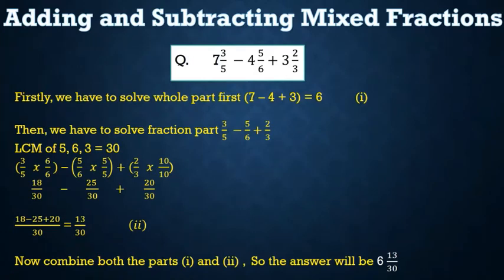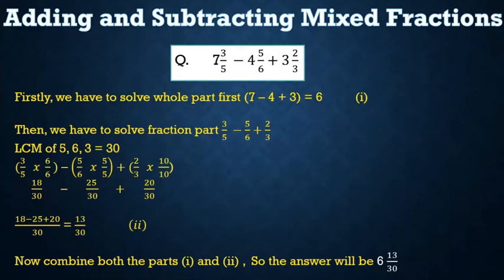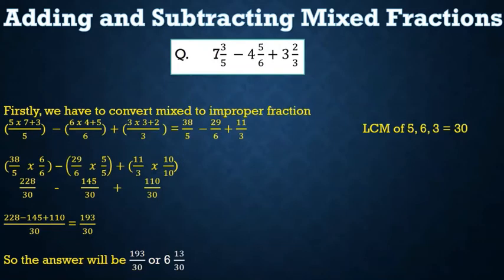Then we solve the fraction part: 3/5 - 5/6 + 2/3. The LCM of 5, 6, and 3 is 30. Converting: (3×6)/30 - (5×5)/30 + (2×10)/30 = 18/30 - 25/30 + 20/30 = (18 - 25 + 20)/30 = 13/30. Combining the whole number part and the fraction part: 6 + 13/30 = 6 13/30.